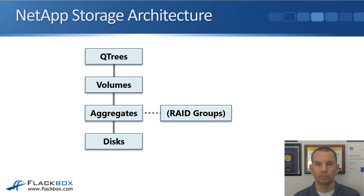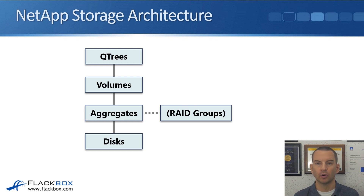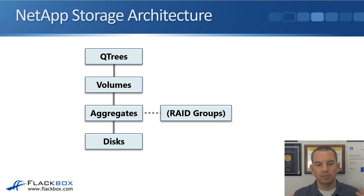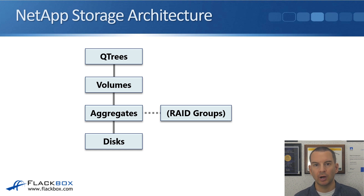The next thing we have is an optional component: Qtrees. The Q stands for quotas, because Qtrees are most commonly used for configuring quotas, though they can be used for some other things as well. Qtrees are optional and go into your volumes. If you had a Windows client with a drive mapped to a volume and you have a Qtree in there, the Qtree will show up as a folder inside that volume.